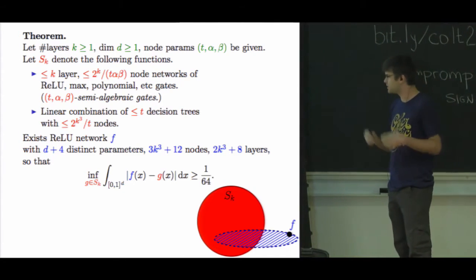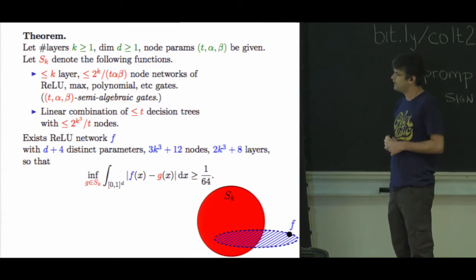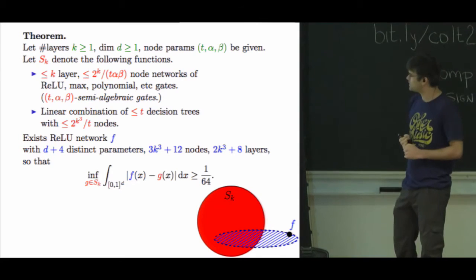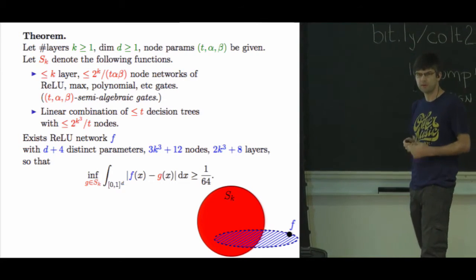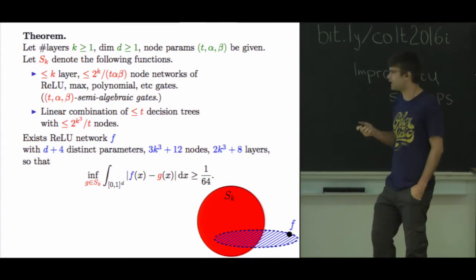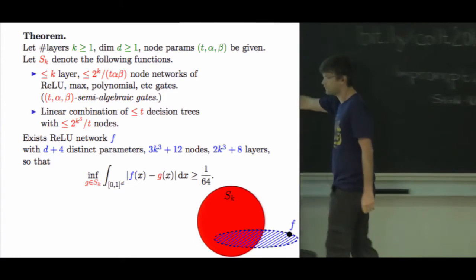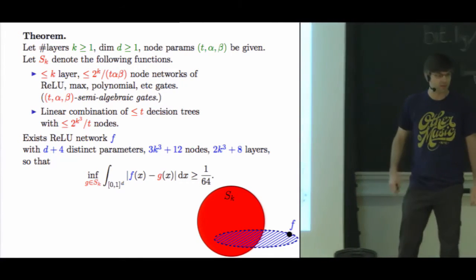So there's this shallow class set of functions and there's a small set of functions, and none of them can approximate this very small many-layer function. And again, k is a free parameter, so that's the difference with Ohad's, but I don't have a good dimension dependence here.